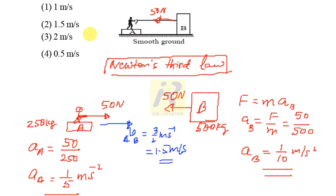So 1.5 meter per second is the answer — the second option is correct. The relative velocity of A with respect to B after 5 seconds is 3/2, or 1.5 meters per second. Thank you.